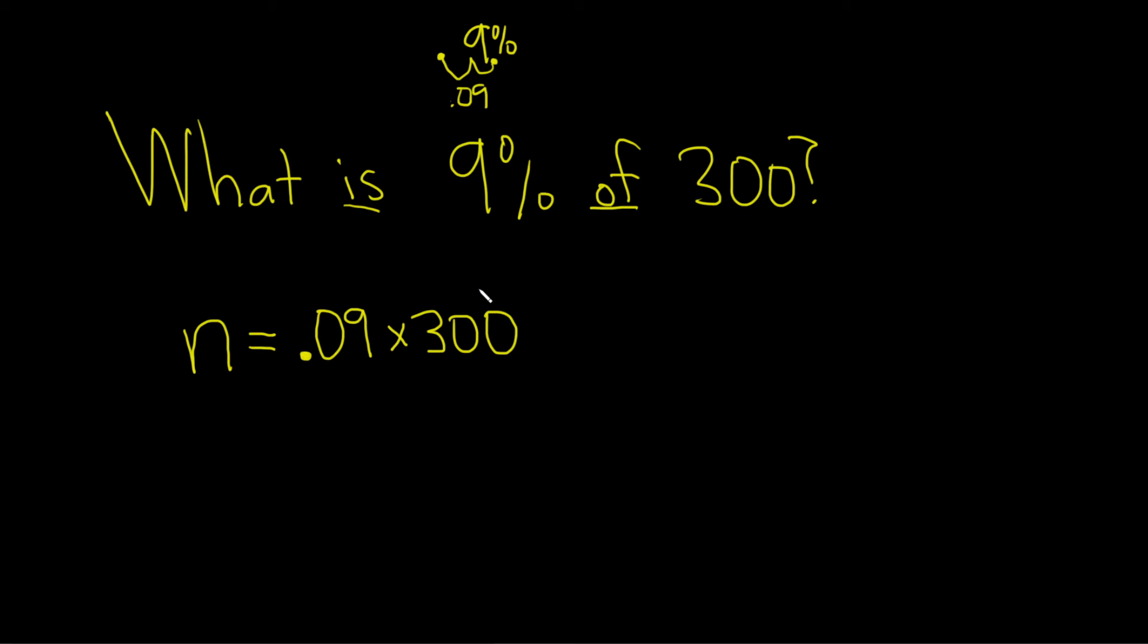So I'm going to put this in my calculator. .09 times 300. I got 27. So n is equal to the number 27. And that should be the final answer. I hope this video has been helpful.